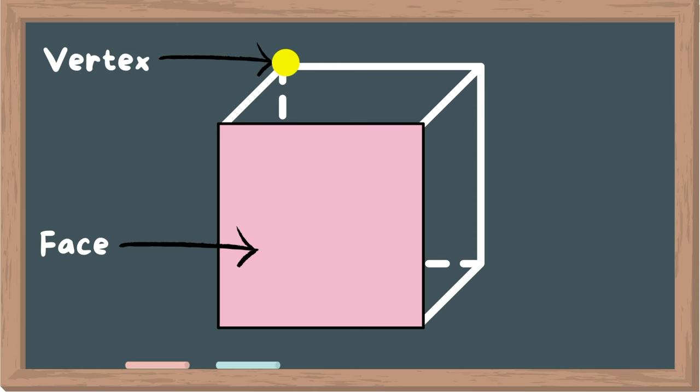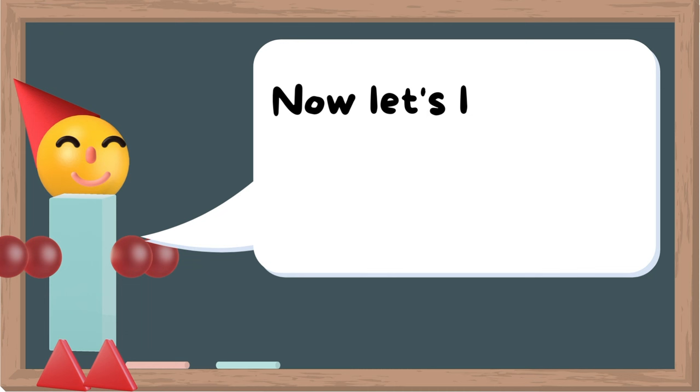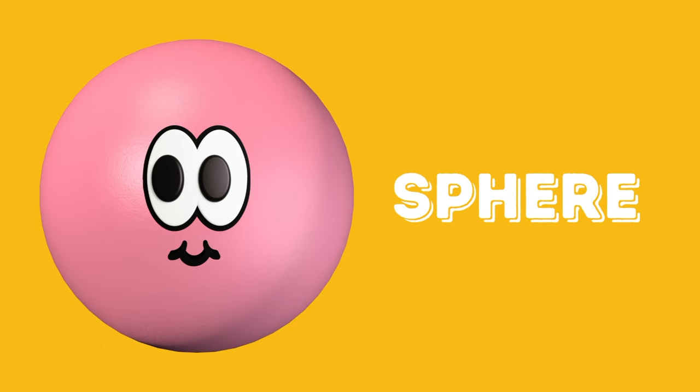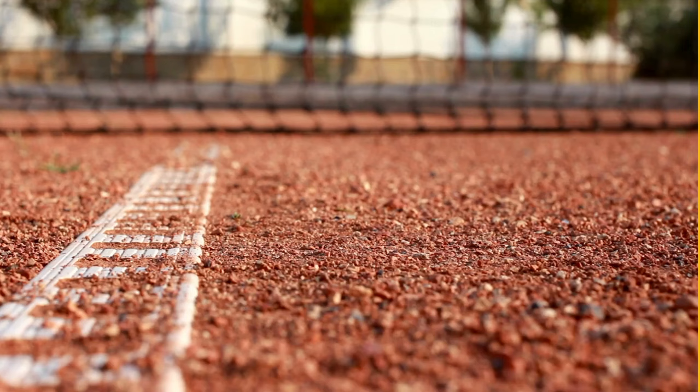Now let's learn the names of some popular 3D shapes. This is a sphere. A sphere is basically a ball with no faces, vertices, or edges.